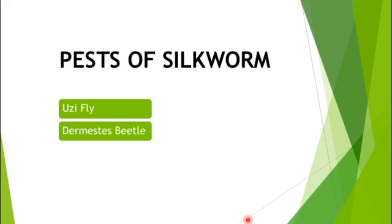Hello everyone. In this lecture we will learn about pests of silkworm, that are Uzi fly and Dermestes beetle. We will discuss the life cycle of these pests, their symptoms of attack, and what control measures we can opt for to control their infestation.